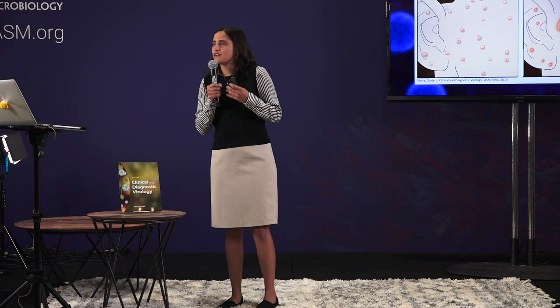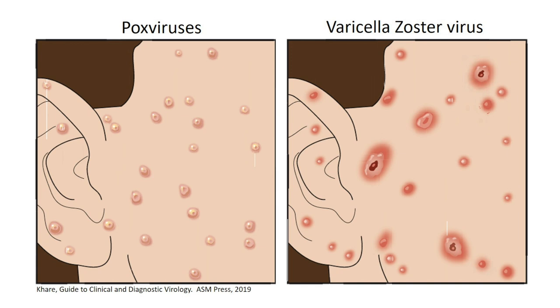Another feature of these pox virus pustules is that they all tend to occur in the same stage. So they'll all generally appear together, umbilicate, ulcerate, and then fall off together. And that can be useful when you're trying to differentiate between different viruses. For example, chicken pox, which is caused by varicella zoster virus, can happen at all different stages — so some new ones and some that are already ulcerating.